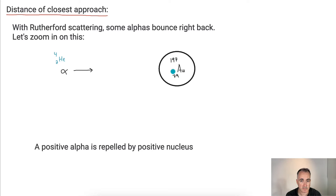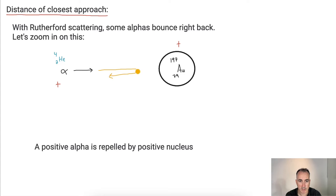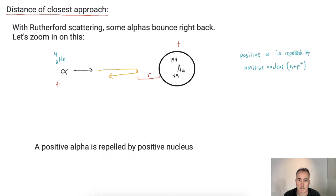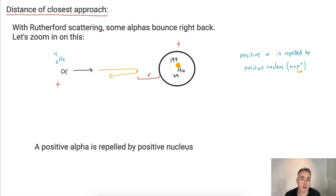The alpha particle has a positive charge, and the gold nucleus also has a positive charge. So they're going to repel each other. If we look at one that's exactly head-on, it will come in and just turn around. At the point where it turns around, there is some distance R — that is the distance of closest approach. The positive alpha particle is repelled by the positive nucleus because the nucleus has protons, which are positive.